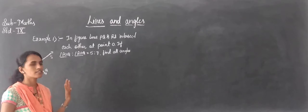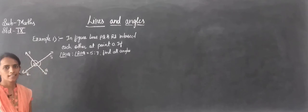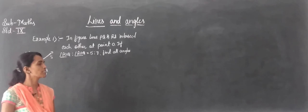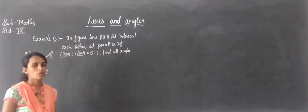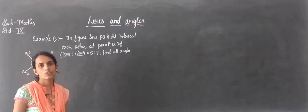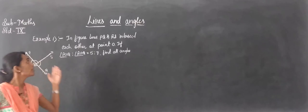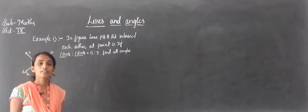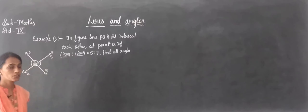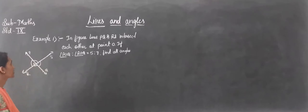Hello dear students. We already started the topic of lines and angles. In yesterday's class we studied some basic terms, types of angles, definitions of angles, some important types of angles, and the theorem on vertically opposite angles. Today we will solve some examples based on that theorem.